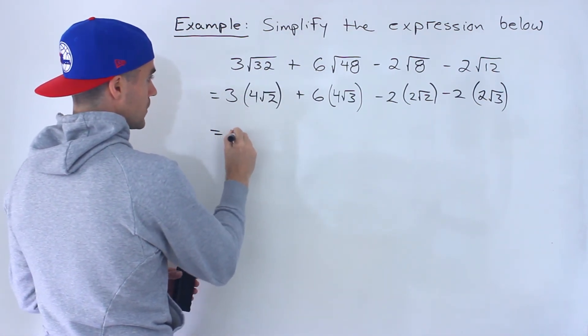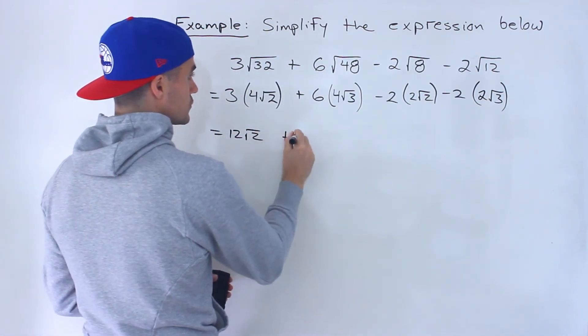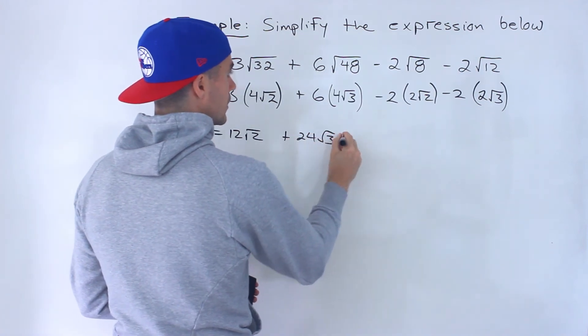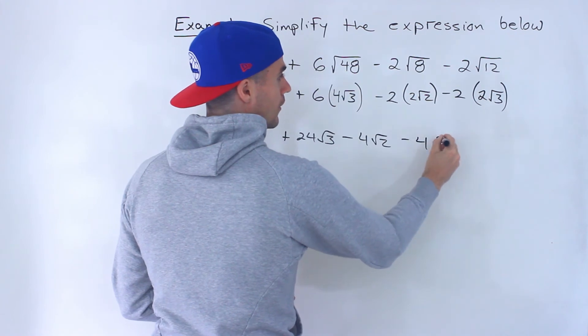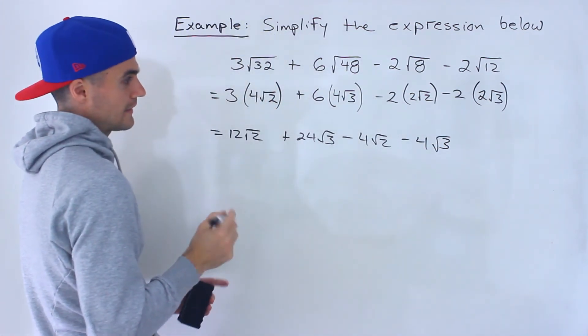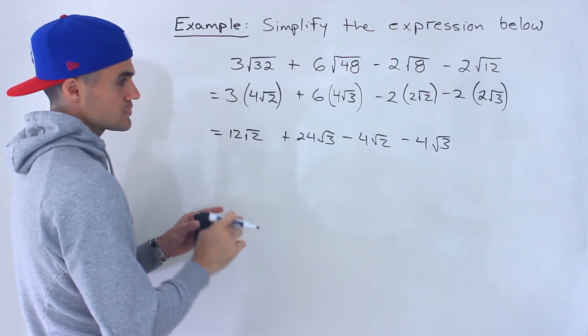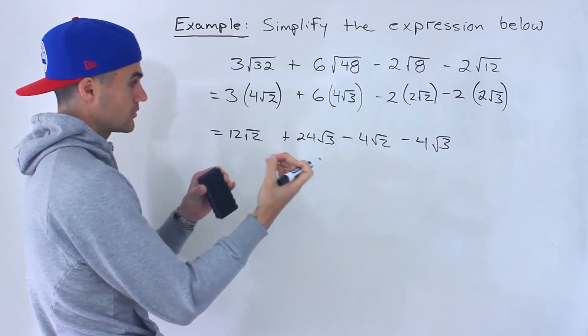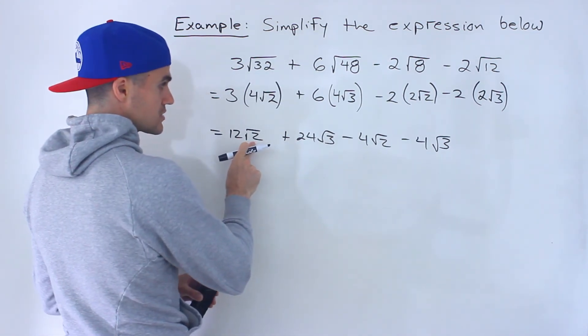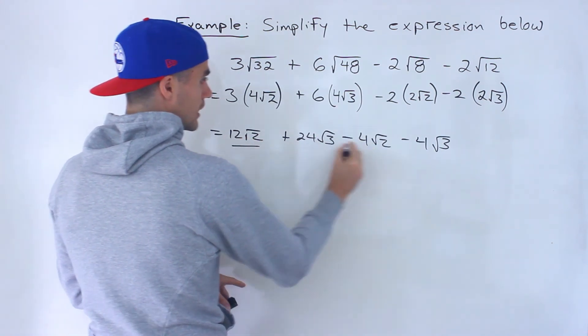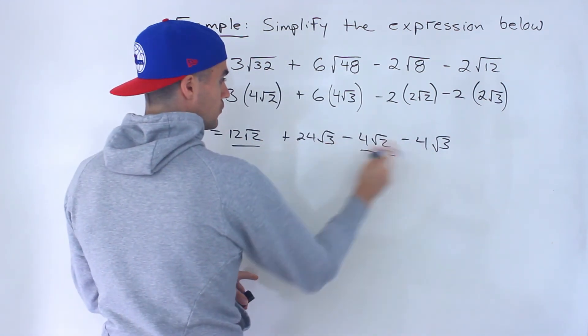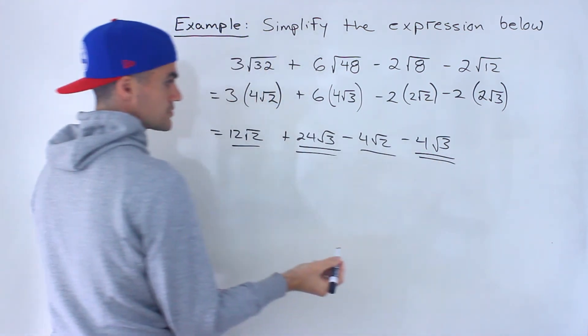So here, 3 times 4 is 12. So we'd have 12 root 2, 24 root 3, minus 4 root 2, minus 4 root 3. And like terms, when you're dealing with radicals, notice that this is a root 2, this is a root 2. So these two expressions are like terms, and then we have a root 3, root 3. So these two expressions are like terms.